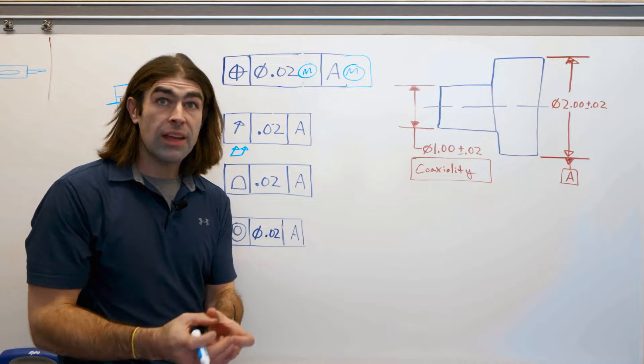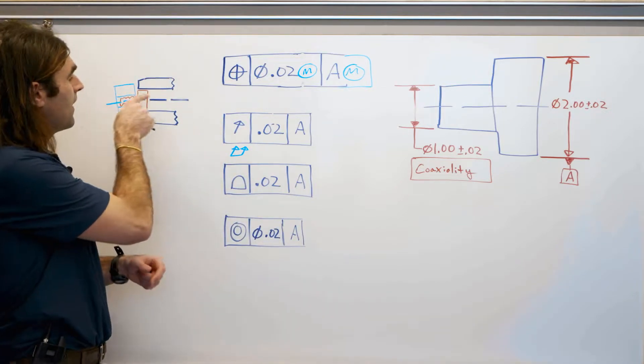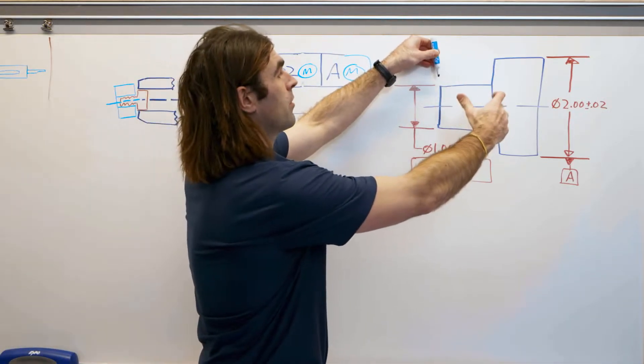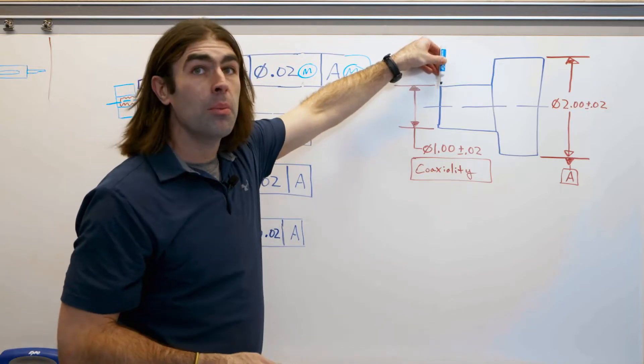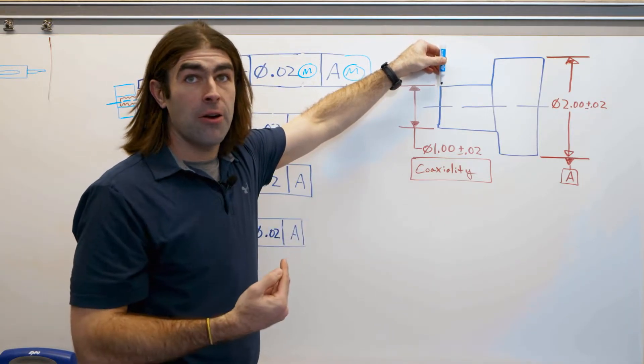You're going to grab the datum the same way, but instead of trying to find the axis of this diameter, we're just going to rotate the part 360 degrees, put an indicator on the diameter, and measure the indicator movement.